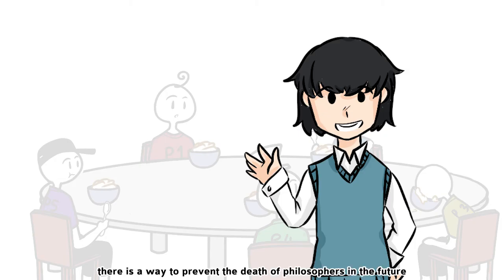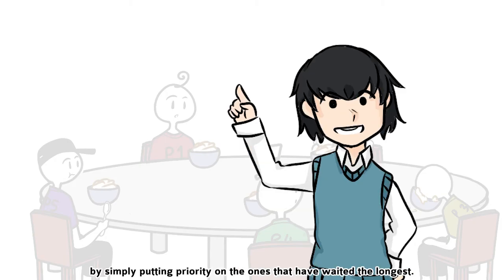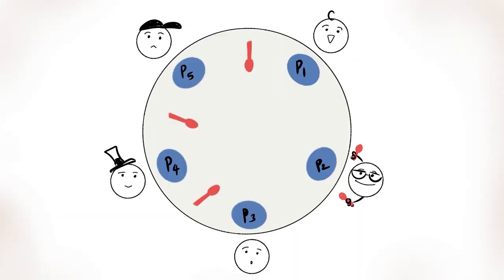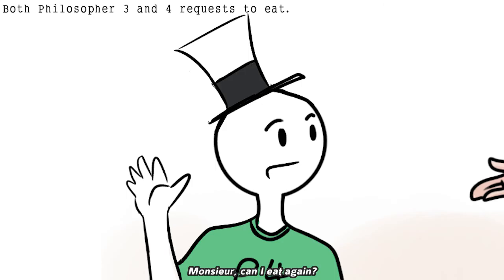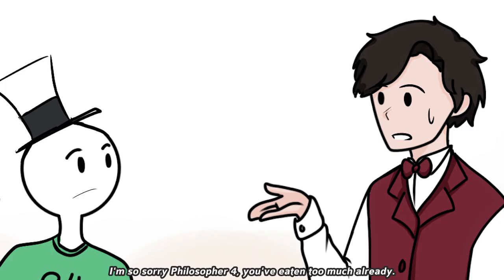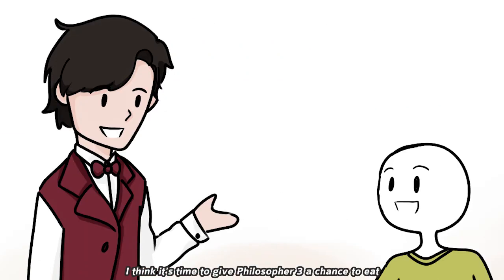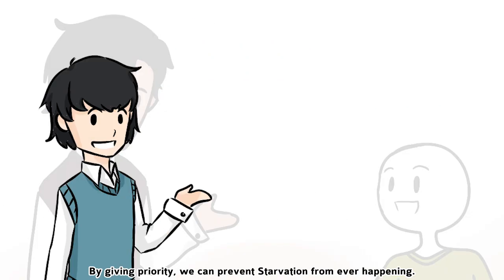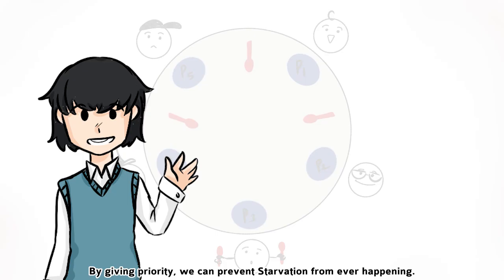But don't worry, there is a way to prevent the deaths of Philosophers in the future by simply putting priority on the ones that have waited the longest. Yes, sir, can I eat again? Could I get a turn? I'm so sorry, Philosopher 4. You've eaten too much already. I think it's time to give Philosopher 3 a chance to eat. By giving priority, we can prevent starvation from ever happening.